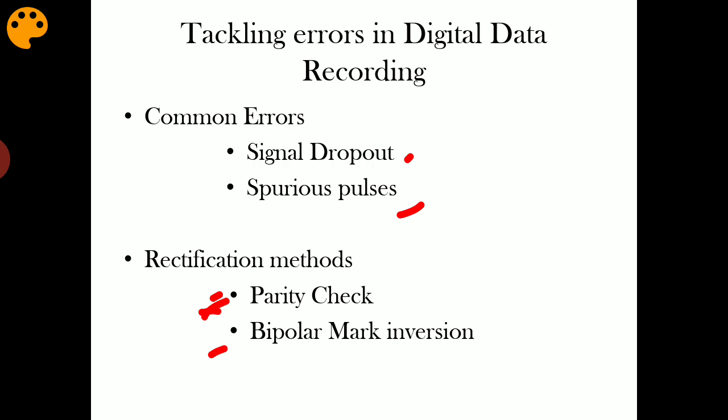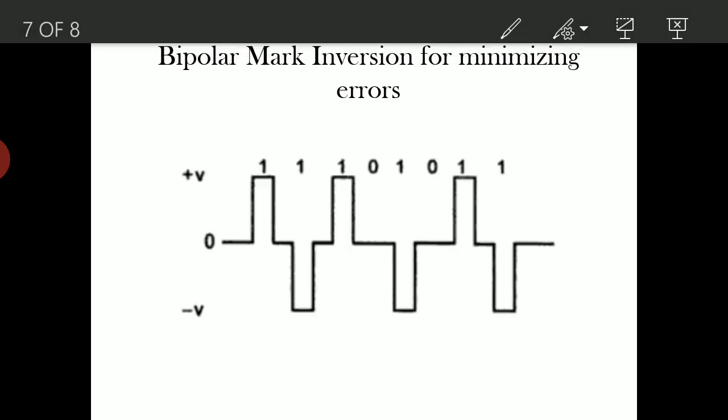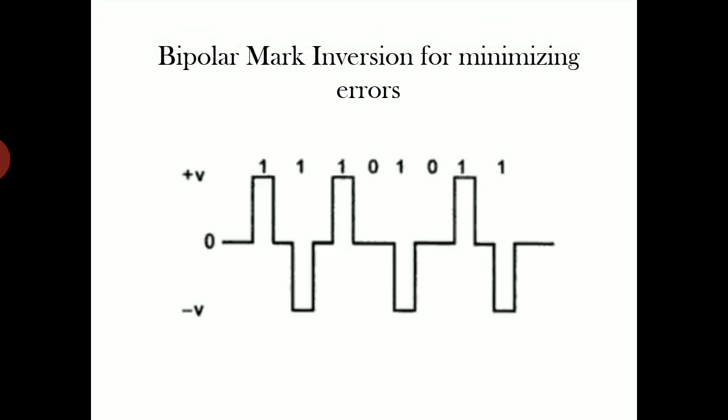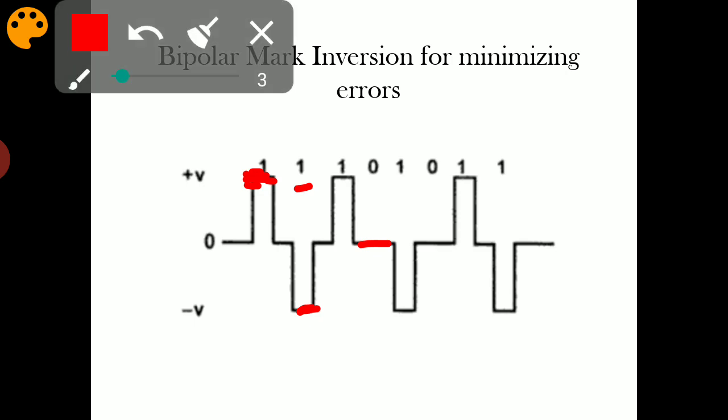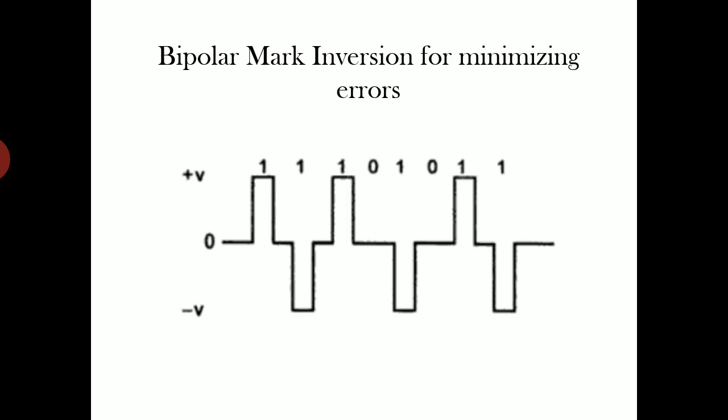Bipolar mark inversion uses another kind of mechanism. The bipolar format consists of a three-state signal. Here alternate ones are marked with inverted voltages. Plus V and minus V both correspond to bit 1, but the alternate ones are marked with alternating plus voltage and minus voltage. Zero corresponds to zero voltage itself. This method of encoding helps to avoid a lot of common mistakes like missing out any bit or inclusion of any unwanted bits into the sequence. These are the common methods of excluding errors in digital data recording.